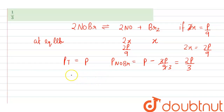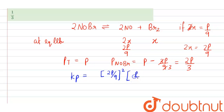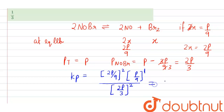Now we have to find the value of Kp. Kp equals the pressure of NO, that is (2p/9)² multiplied by the pressure of Br₂, which is p/9 raised to the power 1, divided by the pressure of NOBr, which is (2p/3) whole squared.